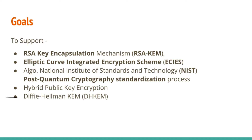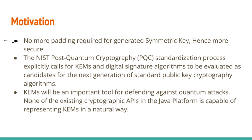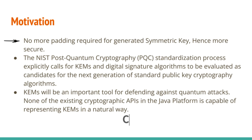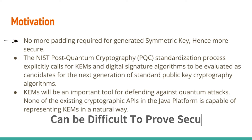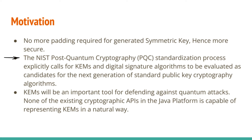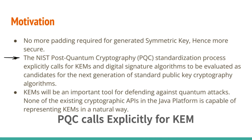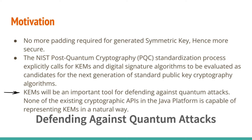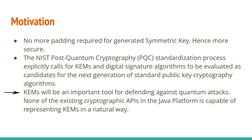The third goal is to allow security providers to implement KEM algorithms in either Java or native code. The fourth goal is to include an implementation of Diffie-Hellman KEM, that is DHKEM. The main motivation is that the traditional technique encrypts a randomly generated symmetric key with the public key, but that requires padding and can be difficult to prove secure. A KEM instead uses properties of a public key to derive a related symmetric key, which requires no padding. The NIST post-quantum cryptography standardization process explicitly calls for KEMs and digital signature algorithms as candidates for the next generation of standard public key cryptography. KEMs will be an important tool for defending against quantum attacks. None of the existing cryptographic APIs in the Java platform is capable of representing KEM in a natural way.